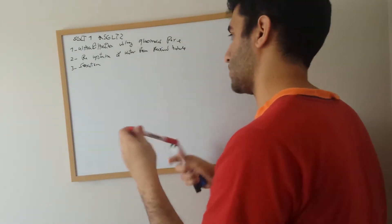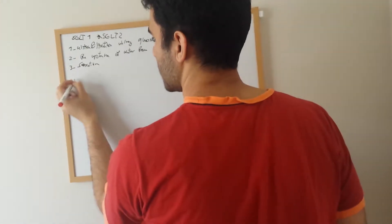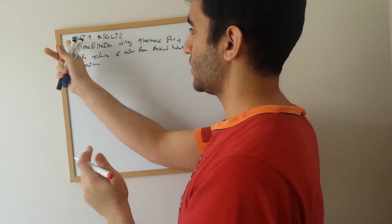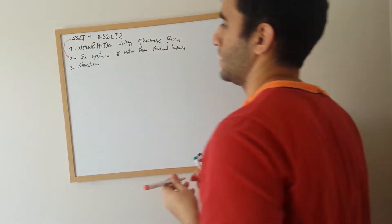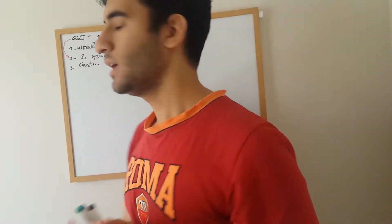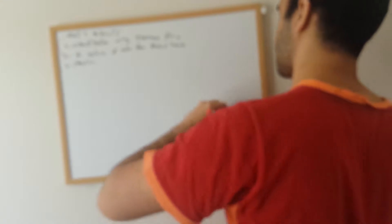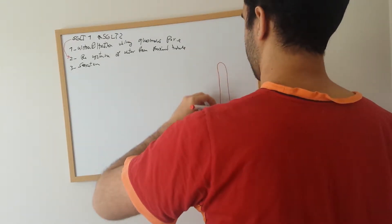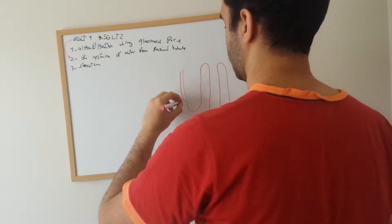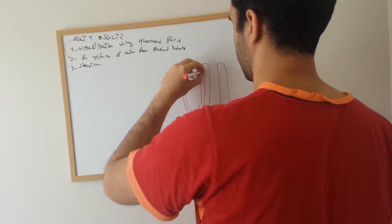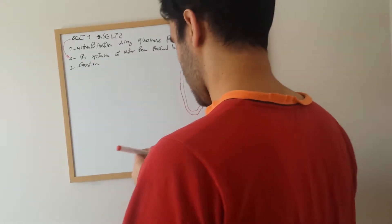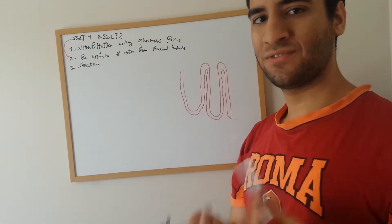The second step involves re-uptake of glucose, primarily through SGLT transporters. These two channels — SGLT1 and SGLT2 — are classified differently. Here is a diagram of the proximal tubule showing where these two channels function.